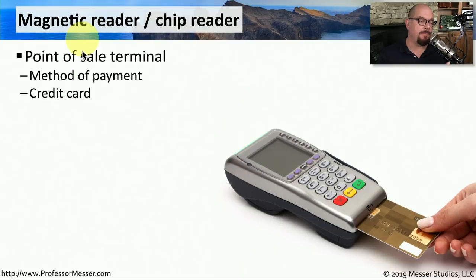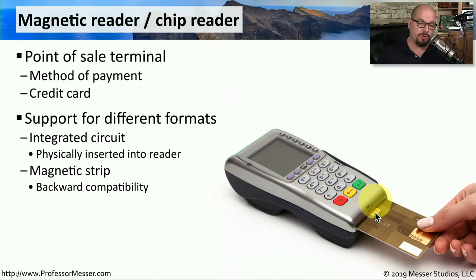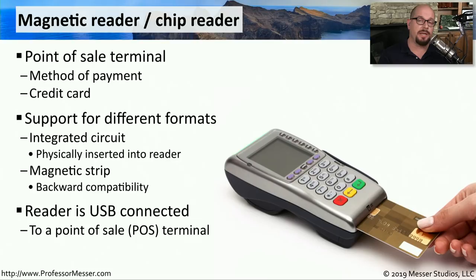If you're working in a retail environment, you're probably using a magnetic reader or a chip reader as a point of sale terminal. This allows you to use a credit card or a mobile device to pay for any product or service. One way to get information into the terminal is using the integrated circuit built into your credit card — by sliding it into the reader, you have a physical connection to that circuit. If your card doesn't have an integrated circuit, you can use the magnetic strip on the back by sliding the card down the magnetic strip reader on the side of the terminal.